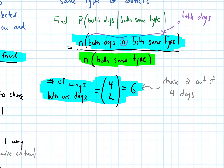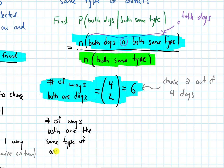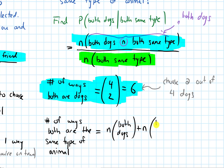Now for the denominator, we need the number of ways that both animals are the same type. This can happen if they're both dogs, or if they're both cats, or if they're both gerbils. Those are all disjoint cases, so I can split this up and count the number of ways both can be dogs, add that to the number of ways both can be cats, and add that to the number of ways both can be gerbils.